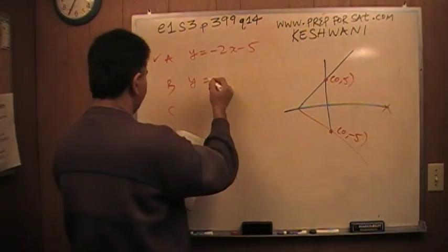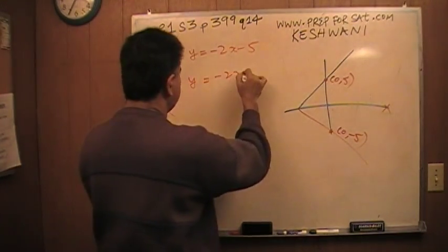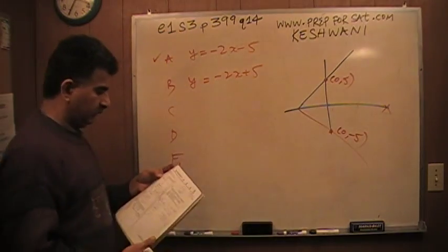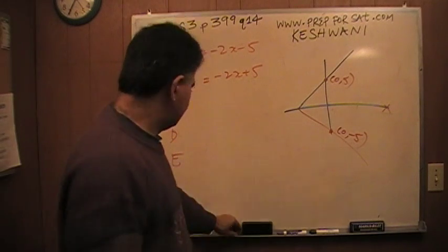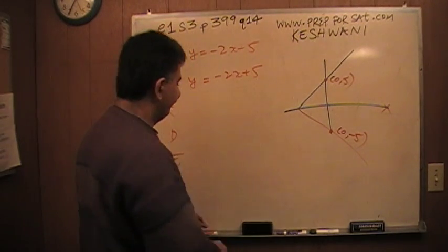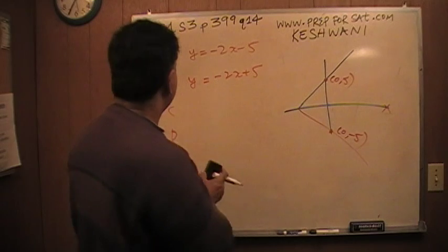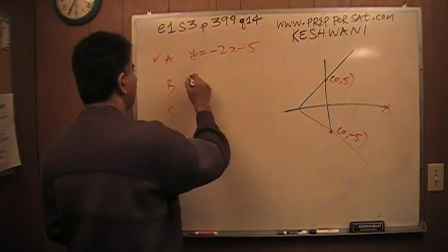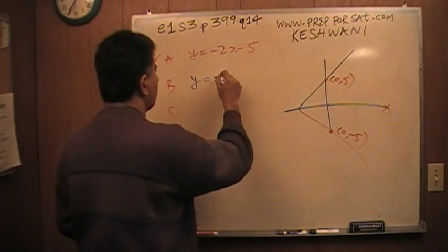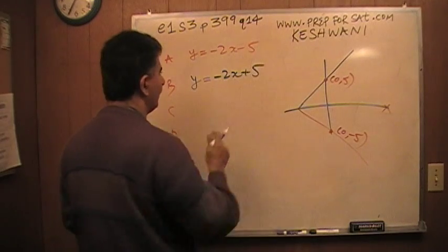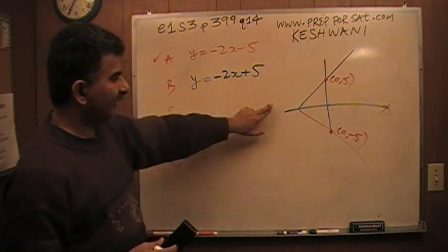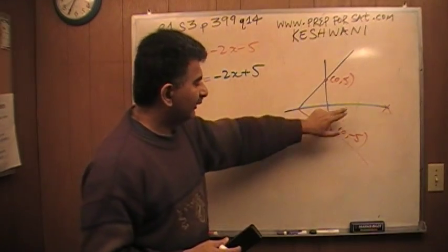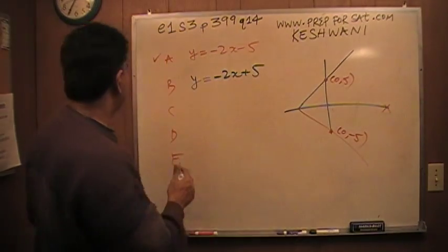The second one, B, says y equals negative 2x plus 5. We have a problem here. When x is 0, y equals positive 5. That is not the case. The reflection tells me that y has to be negative 5. This guy is no good.